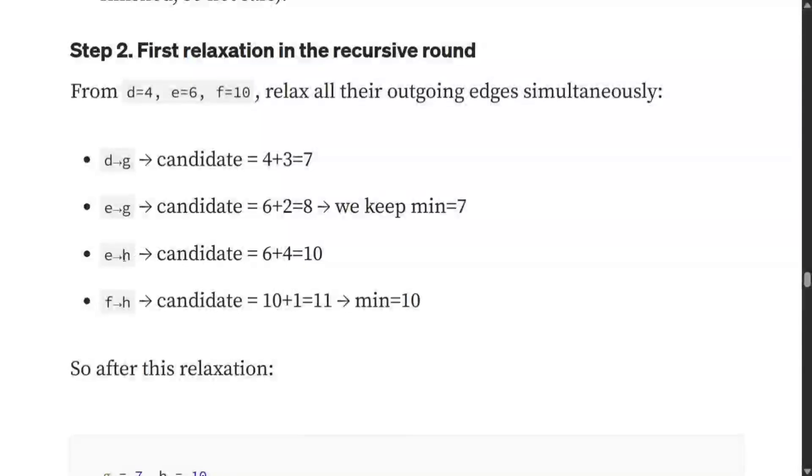Similarly, E to H is 10, F to H is 11, but we'll keep 10. When we're calculating E to H, we're calculating the distance already calculated for E in the first round plus the edge between E and H. Hence the total distance from S to H would be 10.